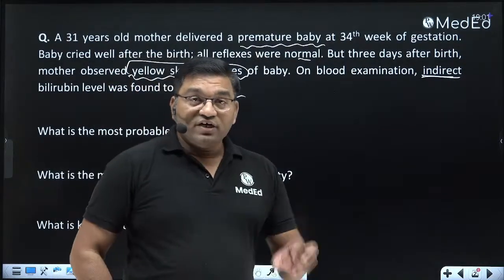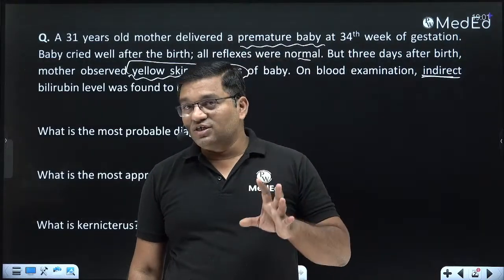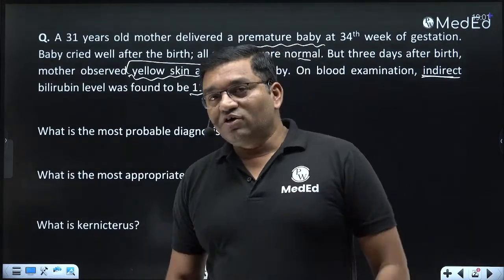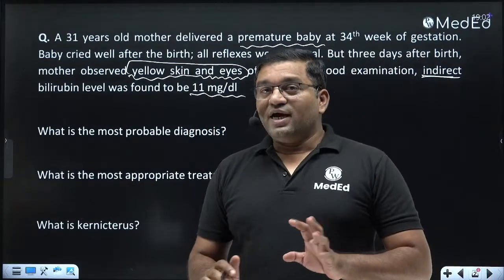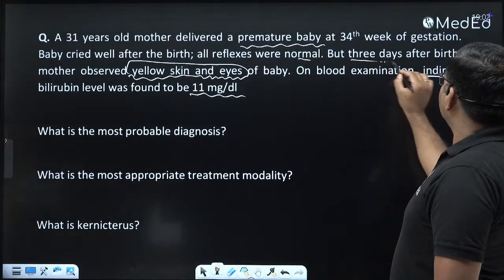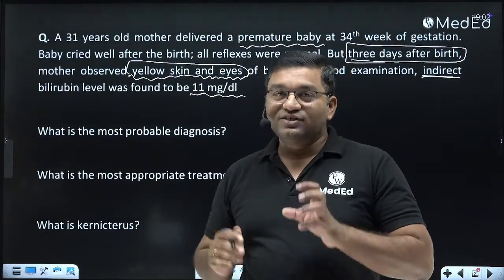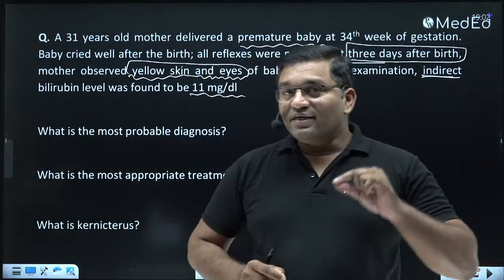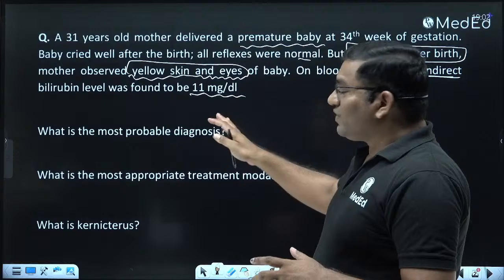When jaundice appears within 24 hours after birth, it is known as pathological jaundice. The most common cause of pathological jaundice is RH incompatibility, followed by ABO incompatibility. But here, there is nothing mentioned about blood groups, and the jaundice appeared 3 days after birth, indicating this is a case of neonatal physiological jaundice.